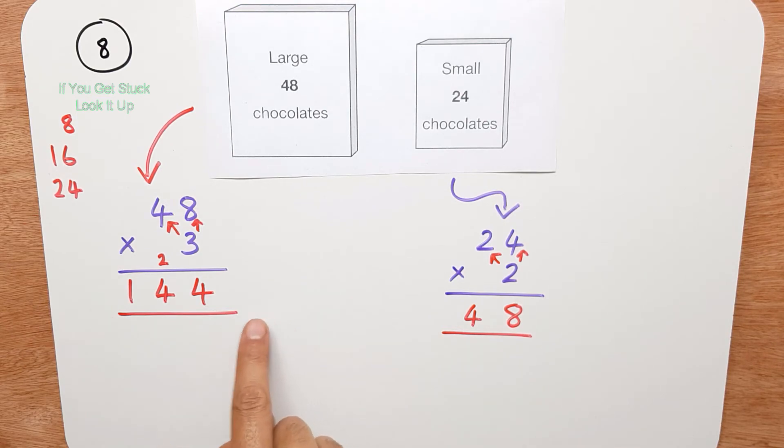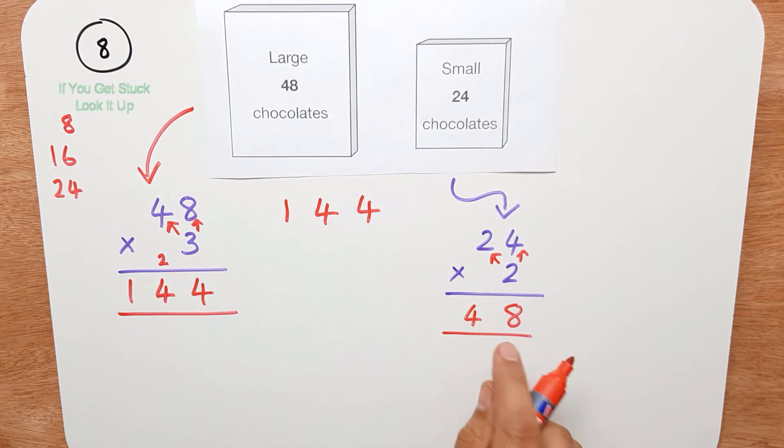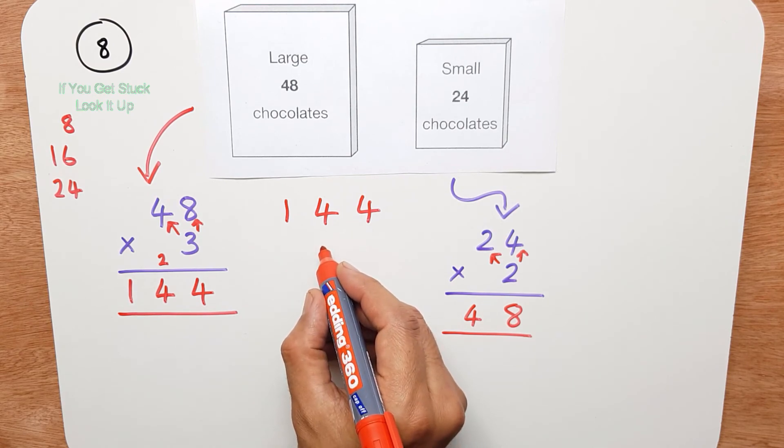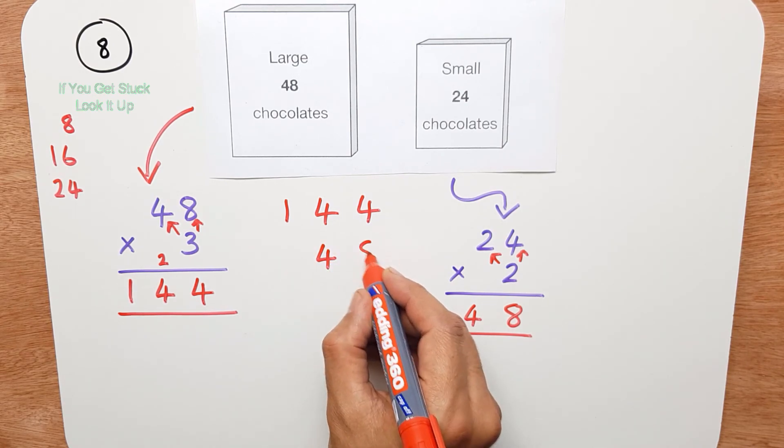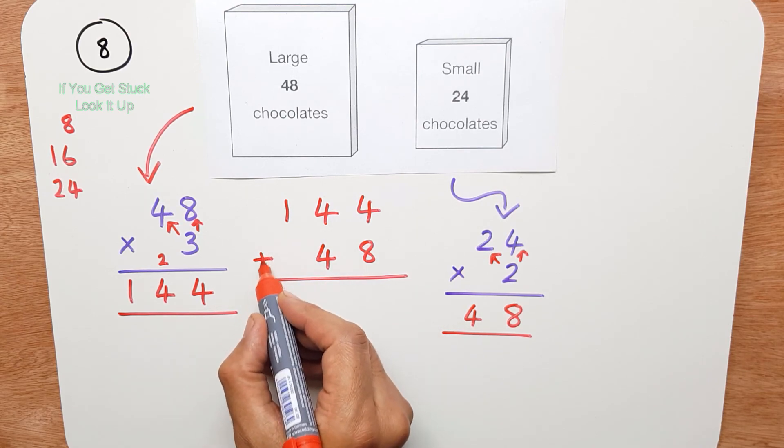Now what I simply do is add these two to get the total. So 144 chocolates, add 48 chocolates. Now you have to be careful that you line these up carefully. And they're in the right column, and we simply add these two.